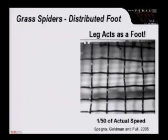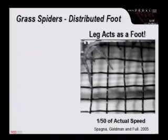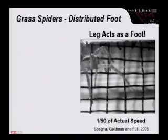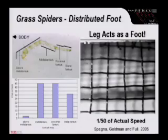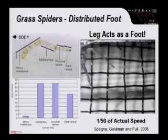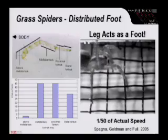How could it do that? When we slow it down 50 times, you see how the leg is hitting that simulated debris. The leg is acting as a foot. In fact, the animal contacts other parts of its leg more frequently than the traditionally defined foot. The foot is distributed along the whole leg.